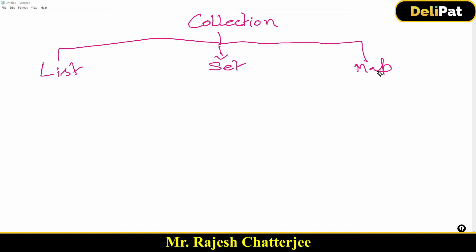Collection is nothing but just like a box. In this box, let's say I have 10 subjects I have to store in a variable. You cannot hold 10 subjects in a normal variable because it can only remember the last one — that's what we've seen. Instead, you take a List variable.